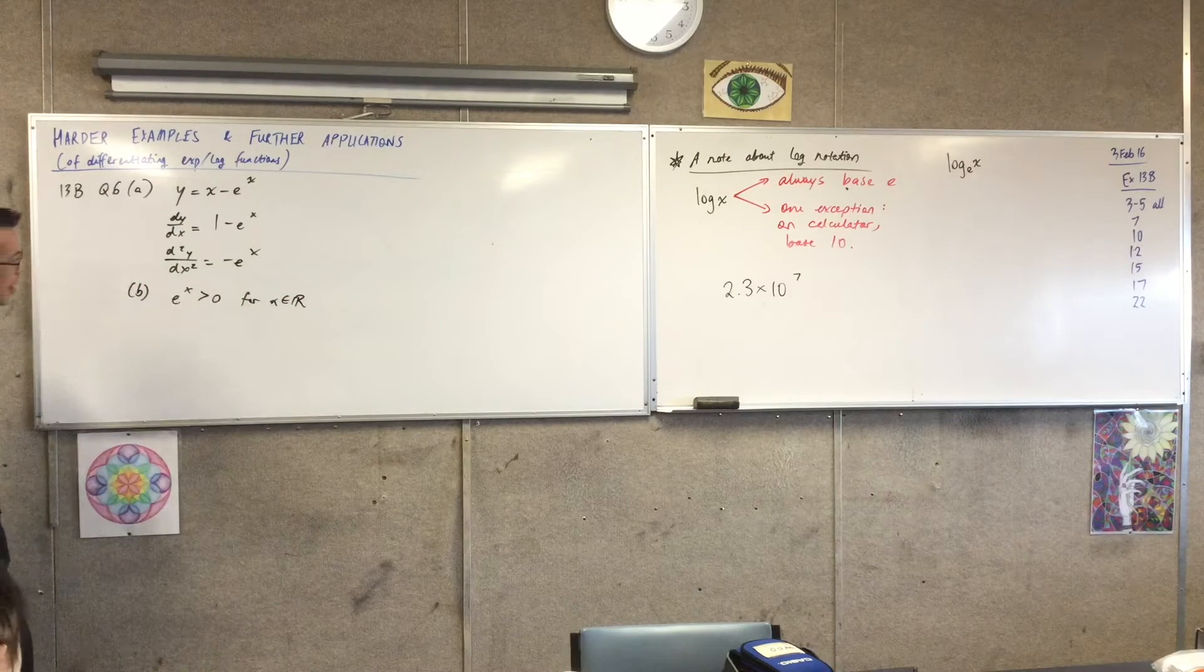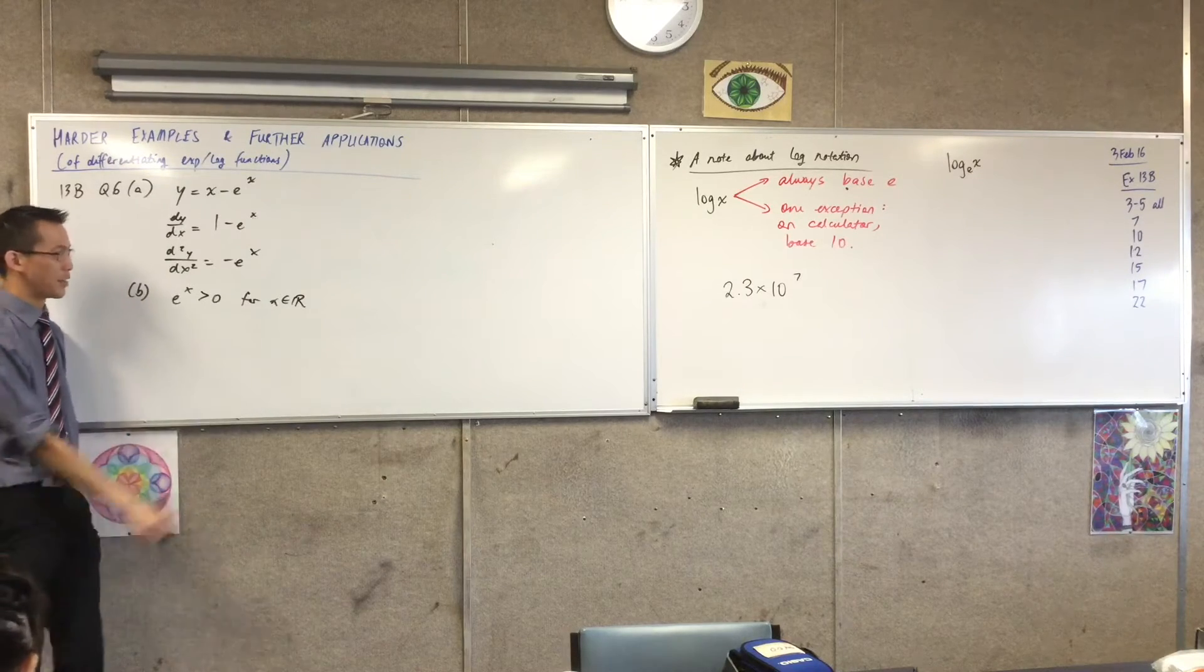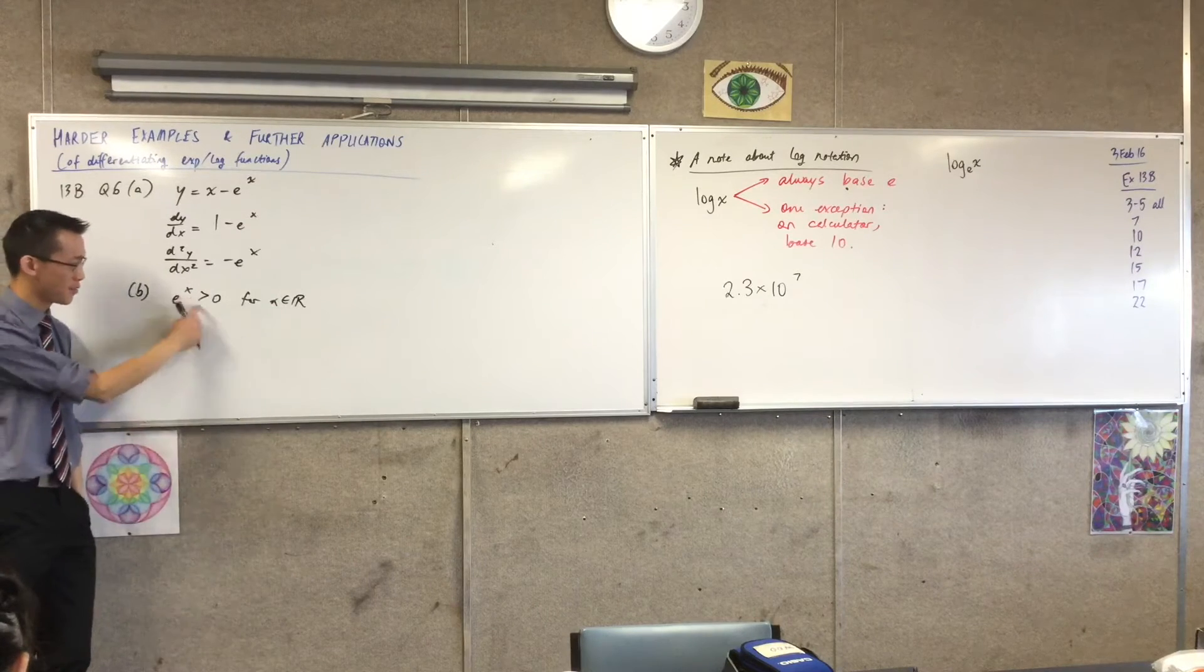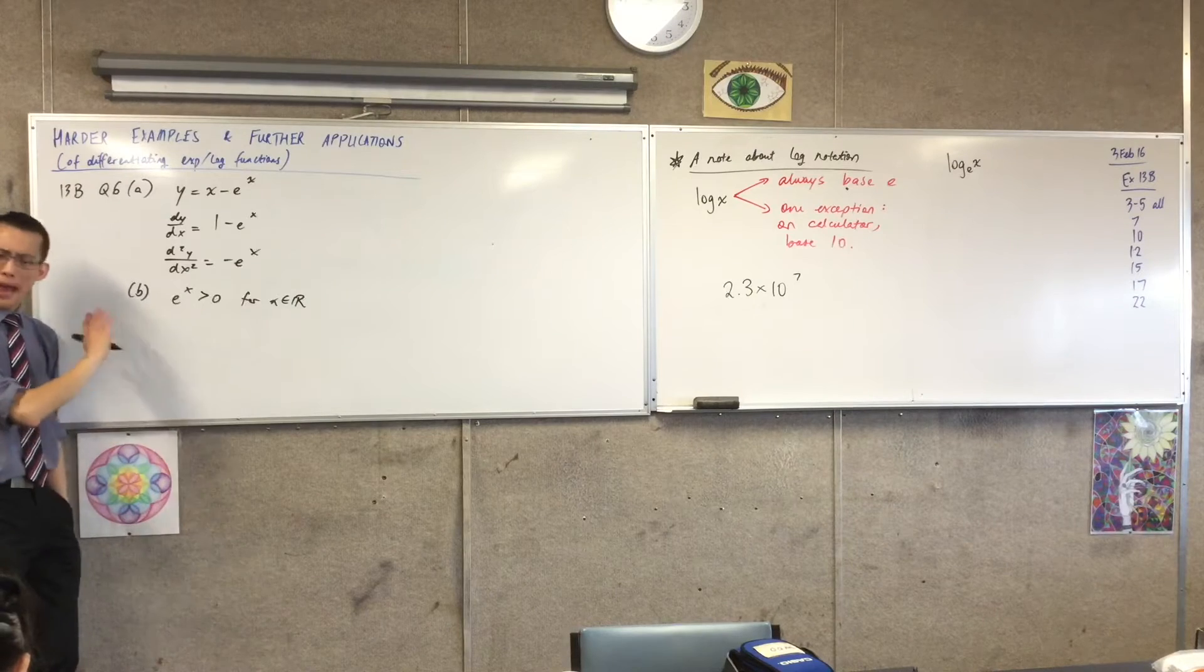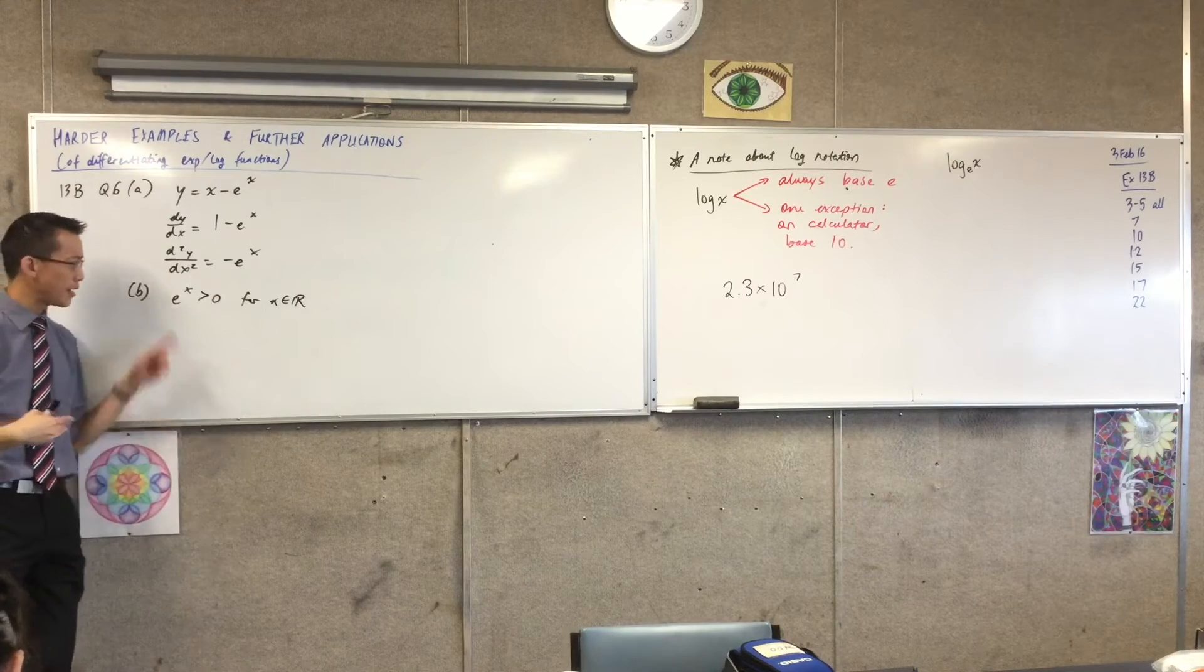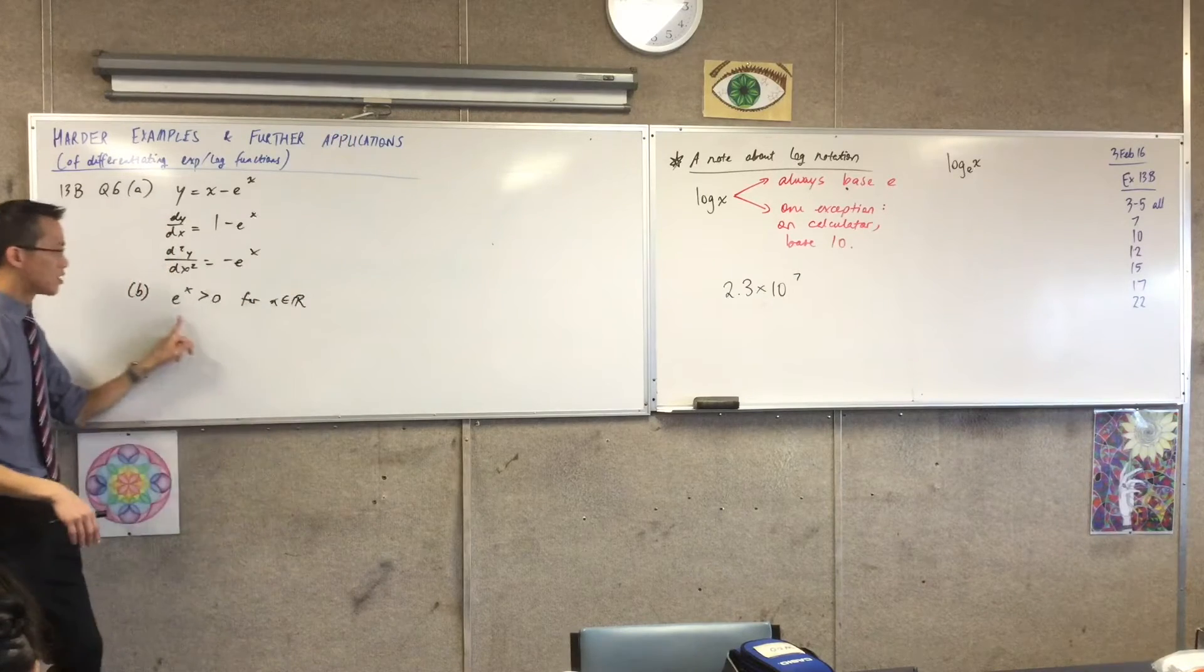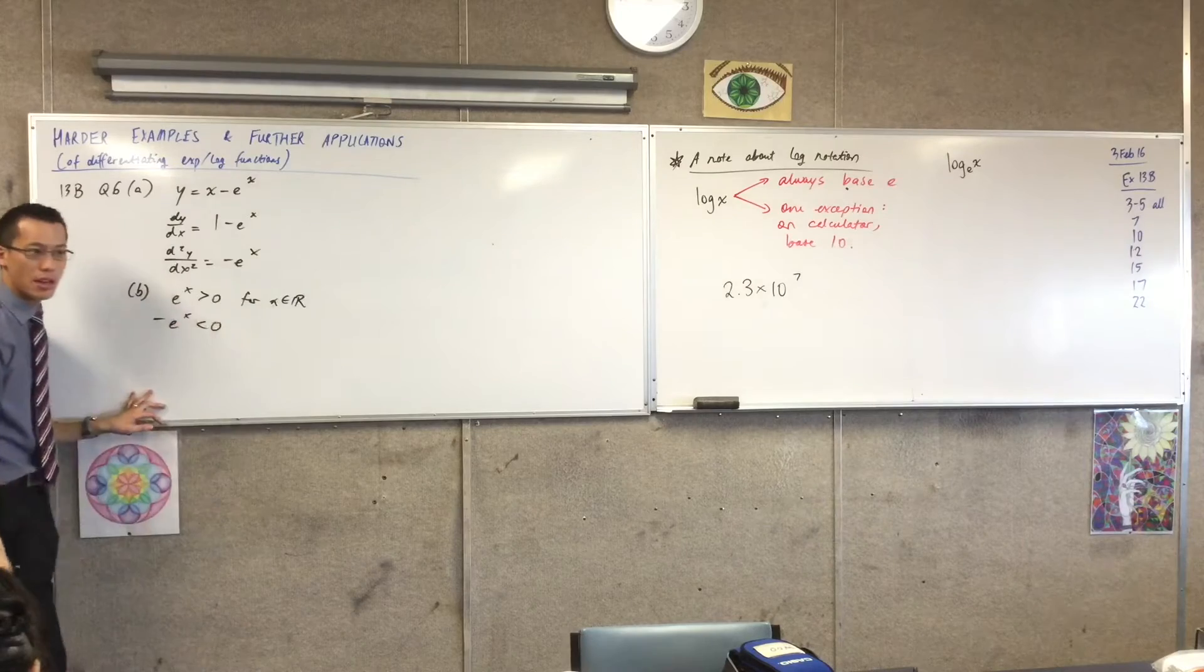I would say e to the x is greater than zero for all real values of x. By the way, as the extension students will know, it's actually critically important that we say things like real values of x. There are actually values of x that can make this not positive, but we'll talk about that.